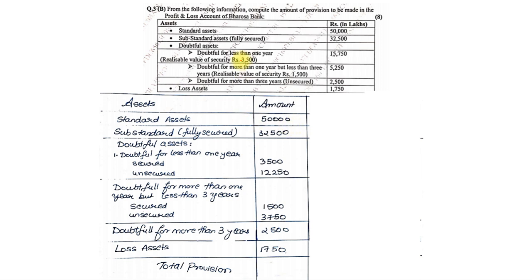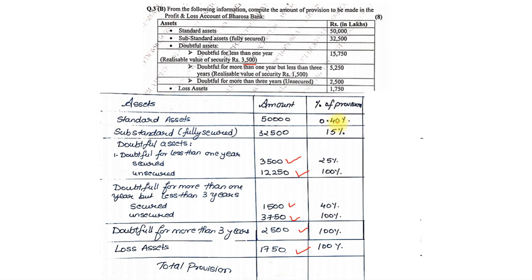We create a table with columns for asset type, amount, provision percentage, and provision amount. For doubtful assets, we split into secured and unsecured portions. Doubtful less than one year: secured 3,500 and unsecured 12,250 (i.e., 15,750 − 3,500). Doubtful more than one year but less than three years: secured 1,500 and unsecured 3,750. The provision percentages are: standard assets 0.4%, substandard fully secured 15%, doubtful less than one year secured 25% and unsecured 100%, doubtful one-to-three years secured 40% and unsecured 100%, doubtful more than three years 100%, and loss assets 100%.